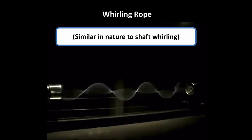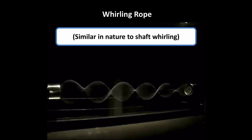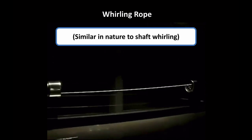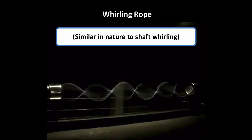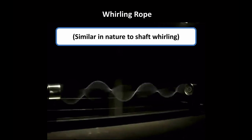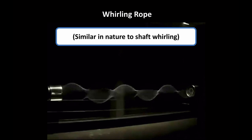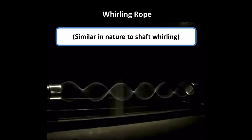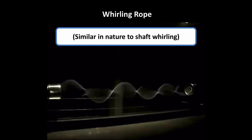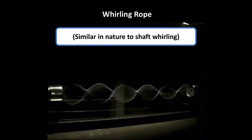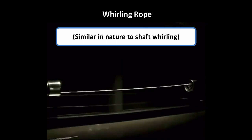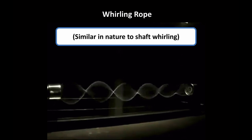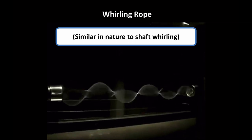Here's a video of a whirling rope that is very similar in nature to shaft whirling. The rope is rotating, and inertial forces tend to push the rope away from the axis of rotation, but the rope has some tension that pulls it back in. We have these two counteracting factors, and the balance between them dictates the behavior of this whirling rope.